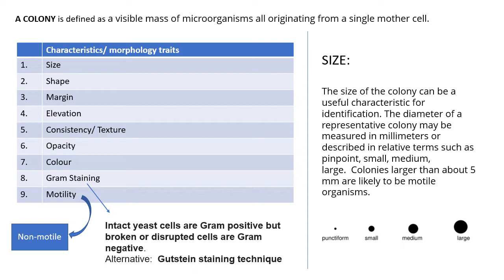A colony is defined as a visible mass of microorganisms all originating from a single mother cell, and each and every cell will have the same characteristics. What we report includes: size, shape, margin, elevation, consistency or texture, opacity, color, gram staining, and motility. Sometimes appearance is also reported, so overall there are nine to ten characteristics.